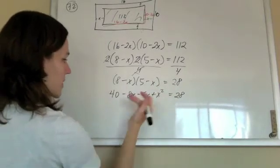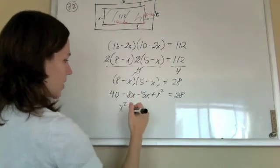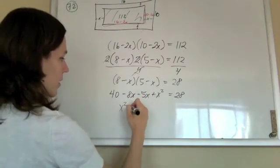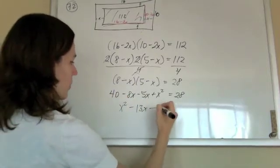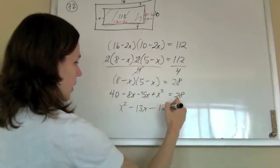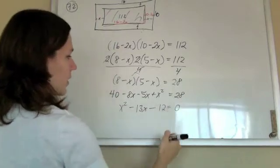Got a quadratic, so our goal is to set it equal to 0 and try to factor it. So I have x squared minus 13x. Kick the 28 over, and that'll be plus 12, and that'll equal 0.